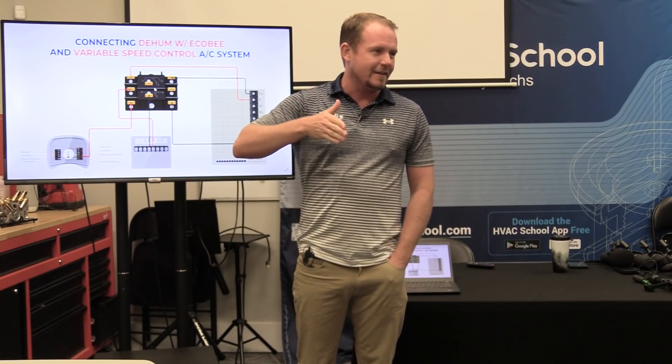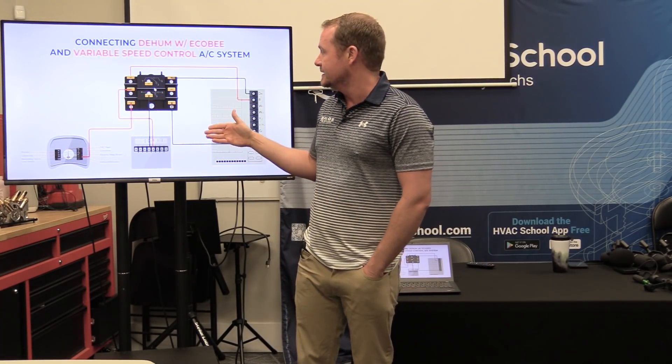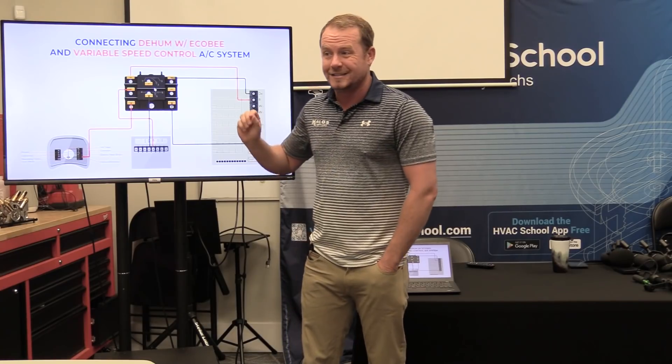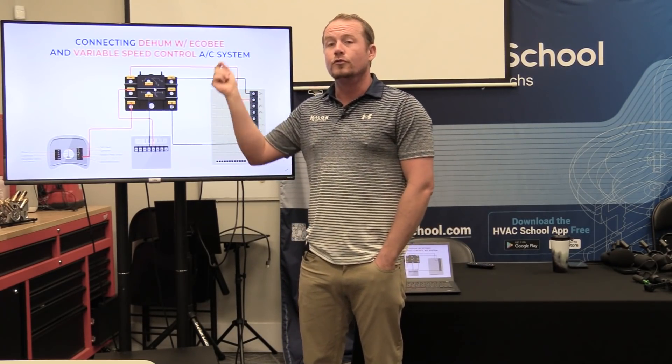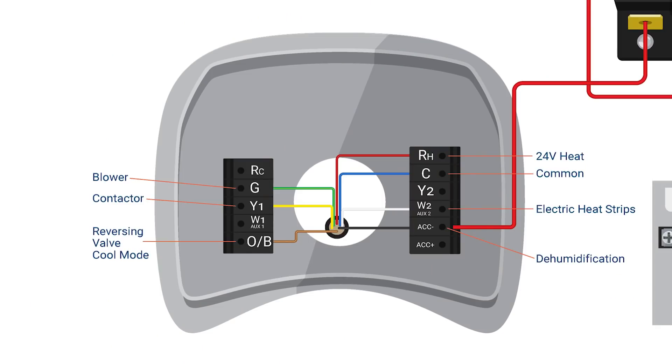And so this is an opposite way of thinking than what we would normally think. Because normally, when we want something to be in its normal state, it's de-energized. And then we energize it to change its state. In this case, the normal state requires DH to be energized. And when we drop DH, when we remove power from DH, that's when it goes into dehumidify mode.